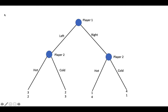Suppose that instead of moving one after the other, player 1 and player 2 act at the same time. Is there a way that we can use the extensive form of a game to represent the situation involving simultaneous play? It turns out that we can, using a simple tool called an information set. An information set is a simple way to illustrate the fact that a player does not know which node they are at in a game.